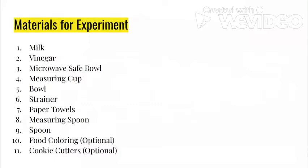For our experiment we're going to need milk — I'm going to use whole milk. Vinegar — I'll be using white distilled vinegar. We also need a microwave-safe bowl, a measuring cup, a regular bowl, a strainer, paper towels, a measuring spoon, and a regular spoon. Some optional items include food coloring or cookie cutters to shape the milk plastic however we'd like. We've gone over our materials and a little bit of background on casein plastic — let's get started on our experiment.